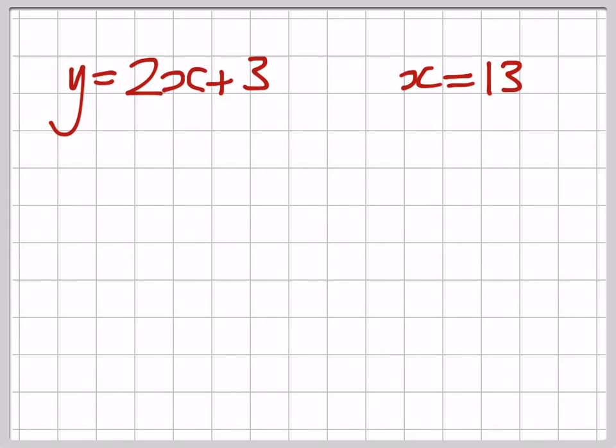Here's an example. Let's say you're told y equals 2x plus 3, but you're given this additional clue that x equals 13. So what you do is you substitute that value in. You say y equals - now where it says 2x, that means 2 lots of whatever the value of x is, which of course is 13 from over there.